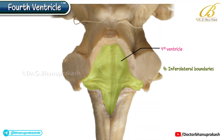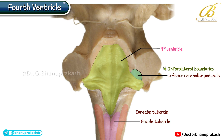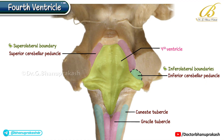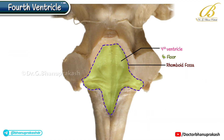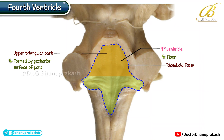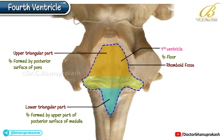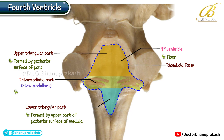The infralateral boundaries are made up of the inferior cerebellar peduncle, gracile, and cuneate tubercle, while the supralateral boundary is formed by the superior cerebellar peduncle. The floor, or the rhomboid fossa, is diamond-shaped with an upper triangular part formed by the posterior surface of the pons, and a lower triangular part formed by the upper part of the posterior surface of the medulla. The intermediate part is marked by the presence of transversely arranged fibers — the stria medullaris — running from the arcuate nucleus to the opposite cerebellum.